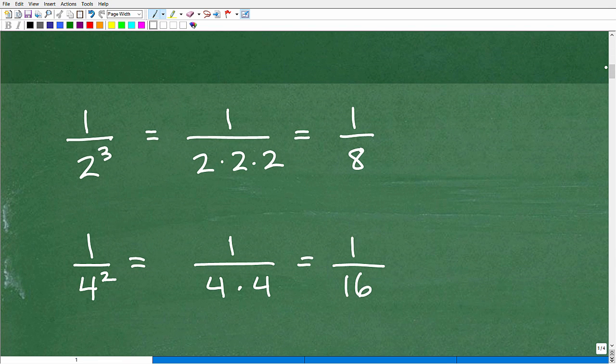Okay, so first of all, we have 1 over 2 cubed and 1 over 4 squared. It's probably a good idea to figure out what these actual values are. So, 2 cubed means 2 times 2 times 2, so 1 over 2 times 2 times 2. That is 8, so we have 1 8th, so this guy right here, this fraction, is actually the fraction 1 over 8, or 1 8th.